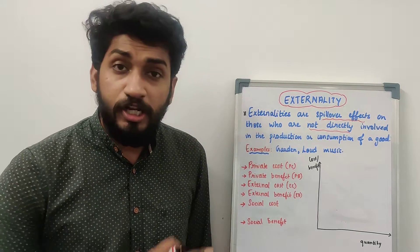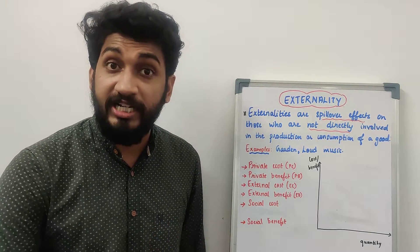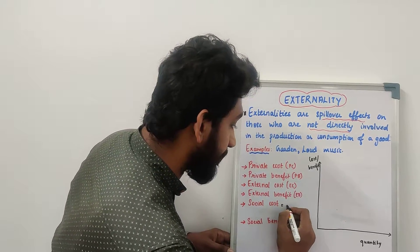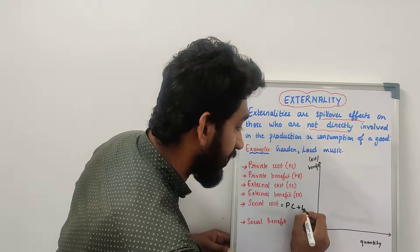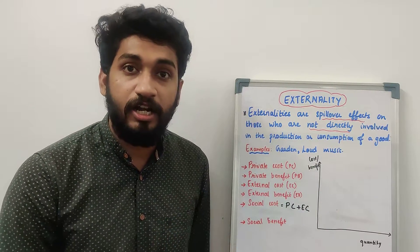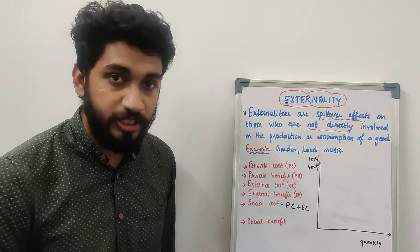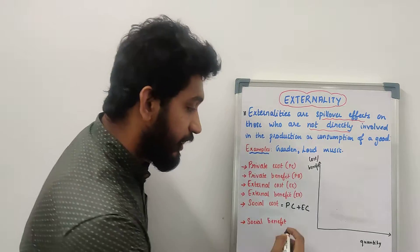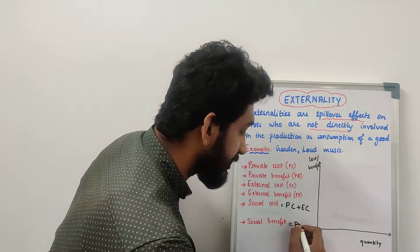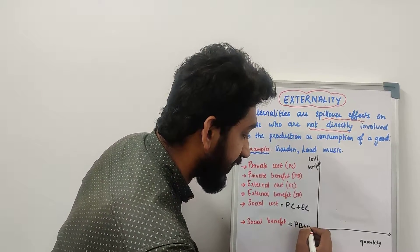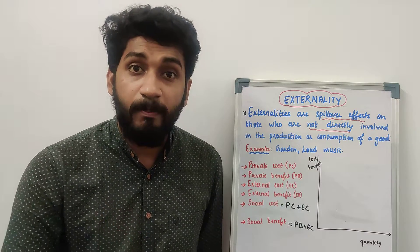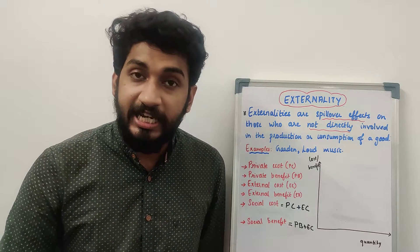Social cost is the society's cost. When we talk about social cost, it is private cost plus external cost — private cost and external cost together form social cost. Social benefit is the society's benefit, which is private benefit plus external benefit.